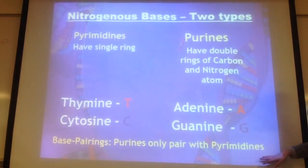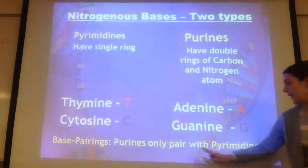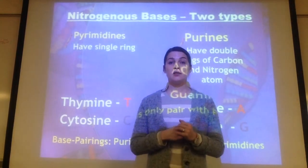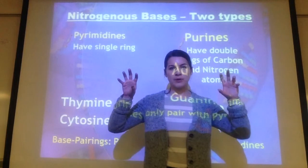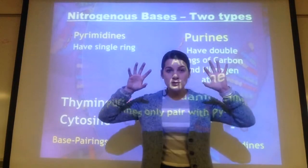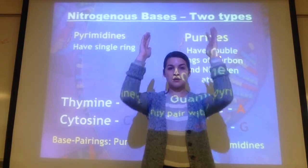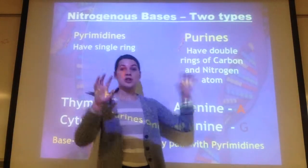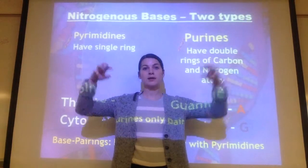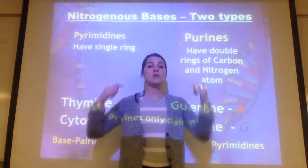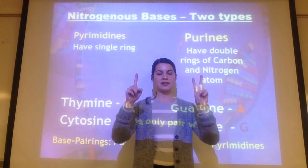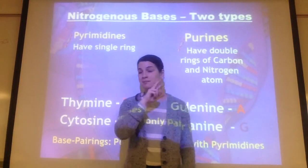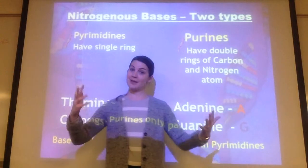Purines only pair with pyrimidines — this is very important and has everything to do with Chargaff's rules. If you have a single ring and a double ring, they're always going to match up and make the inside of the ladder even. You always want it to equal three rings total: one ring plus two rings. Never four rings and never two, because that would make a misshapen DNA molecule.